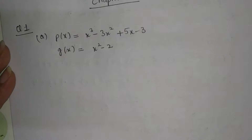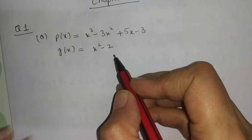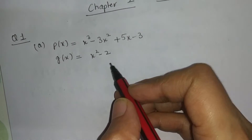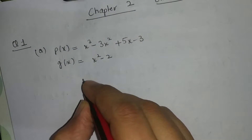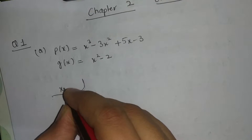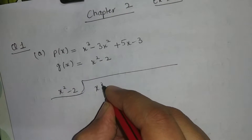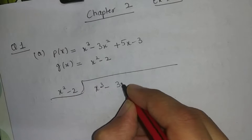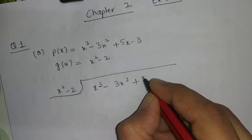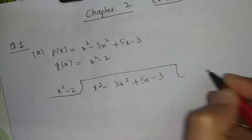In this statement, I have written the values of Px and Gx. We will divide the polynomial Gx in the same position. We will write our quotient: x squared minus 2, divided into x cubed minus 3x squared plus 5x minus 3.